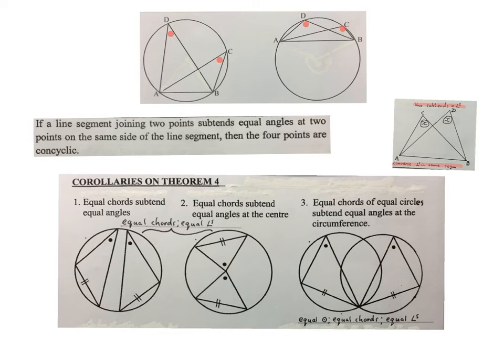And the last one: if they give me two circles that are exactly the same size, I call it equal circles. They have the same diameter, the two circles. They don't have to overlap. And they tell me that in these two equal circles, there are two equal chords with an angle opposite it. In other words, the chords subtend those equal angles, then the angles will be equal.